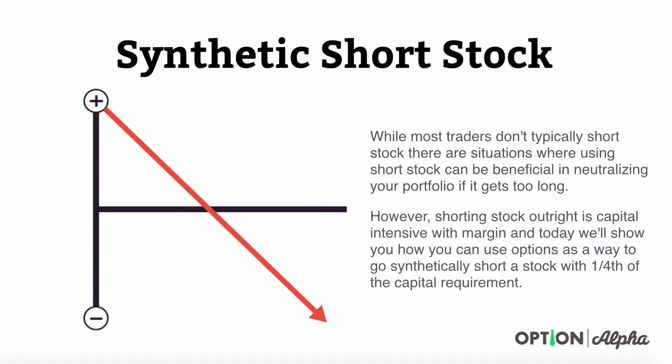Hey everyone, this is Kirk here again at optionalpha.com and in this video tutorial we're going to help you understand how you can go synthetically short a stock position with about one-fourth of the capital that's typically required using options. While most traders don't know that you can typically short stock, there are many situations where using short stock can be beneficial in neutralizing your portfolio if it gets too long or you've got too many bullish positions. However, shorting stock outright is very capital intensive with margin, and today we'll show you how you can use options to go synthetically short a stock with one-fourth of the capital requirement.